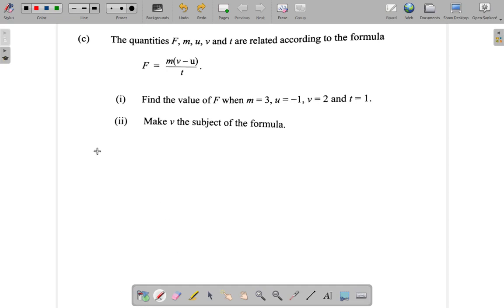Let's see. F equals M is 3, 3 times open bracket. So this is V minus U, all over T. It says U is negative 1, V is 2. So replace V with 2. T is 1.